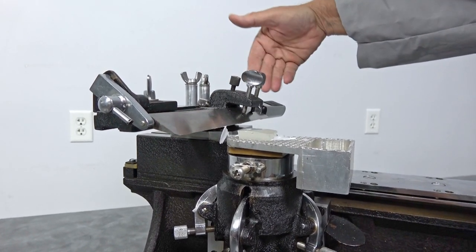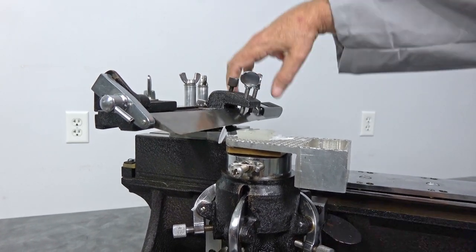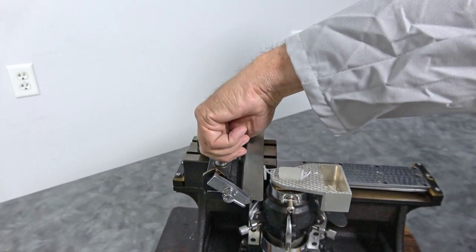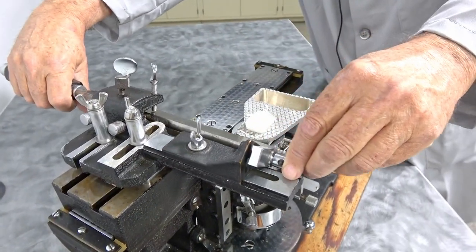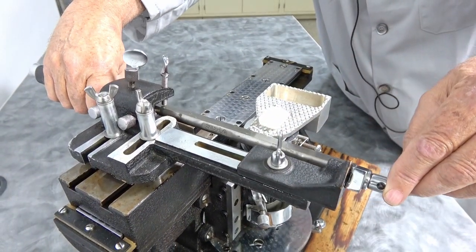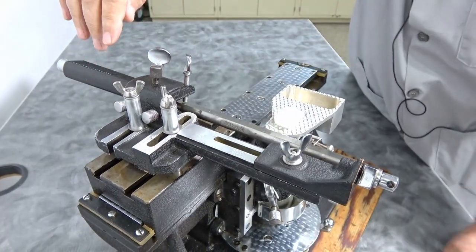When you want to change your blade to get to a new sharp section you can do that as well. Loosening up the levers, sliding that along so you can be refreshing your blade, your section of where you're on the blade.